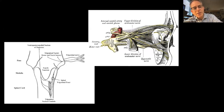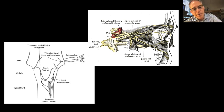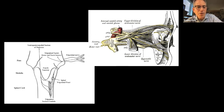Why does cervical paraspinal muscle spasm manifest as eye pain? The nucleus caudalis of the trigeminal nerve extends all down the brainstem from the pons to the medulla, and there's also part of this trigeminal nucleus caudalis that goes into the upper spinal cord. So if there's irritation in the upper neck from a whiplash injury, that may irritate the trigeminal nucleus caudalis and cause referred pain into the eye and eye socket because of the shared innervation of the eye, face, brain, and meninges.